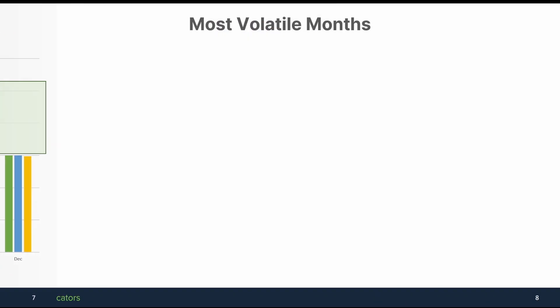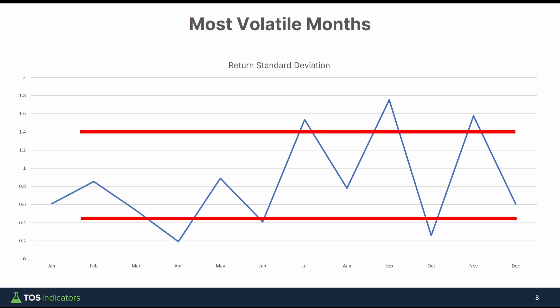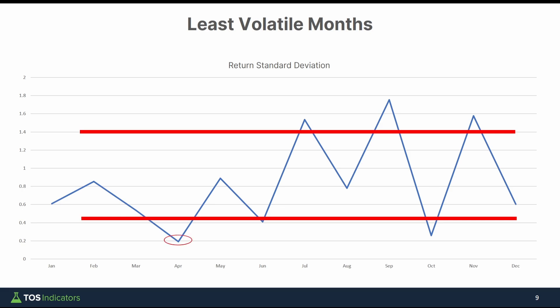Now I want to look at this from a volatility standpoint. To measure volatility, I calculated the standard deviation of the returns plotted for each month, and that's what's shown on this chart. I drew two horizontal lines to give some boundaries for where we might be more volatile compared to less volatile. For more volatile, that's greater than the 1.4 mark on the standard deviation, and three months stand out: July, September, and November — this is the third time November has appeared on our list. Flipping this upside down and looking for the least volatile months, we have April, June, and October.